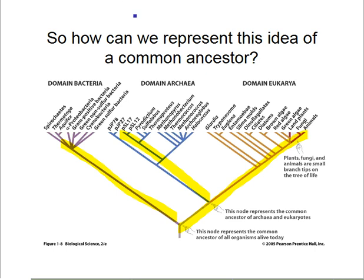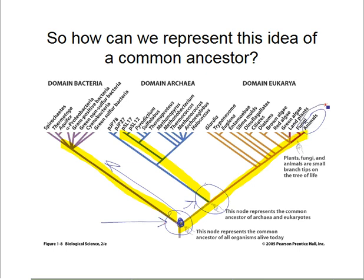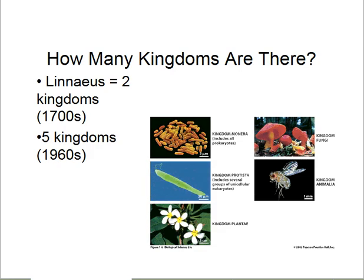At each one of these nodes, which I'm circling, that represents a common ancestor to two different branches. If we look at bacteria, we can see that the common ancestor to bacteria and us — animals — was way back in time. You might be surprised to learn that fungi like mushrooms and animals like us diverged only relatively recently from one another, if we look on a geologic time scale.